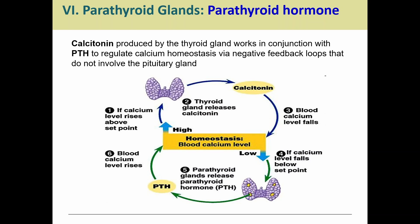These two hormones work opposite each other through negative feedback loops to help maintain homeostasis of blood calcium levels. Looking at this picture: when calcium levels are too high, the thyroid gland releases calcitonin. Calcitonin tells the kidneys to excrete calcium, stops the small intestines from absorbing calcium from food, and signals the bones to absorb calcium and build more bone — so calcium levels fall in response.